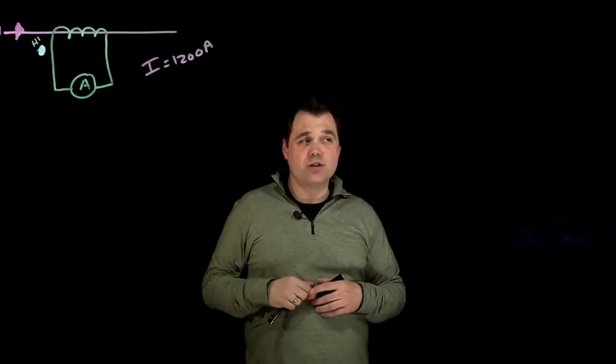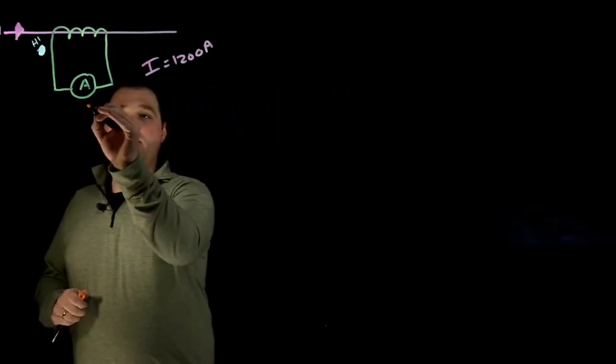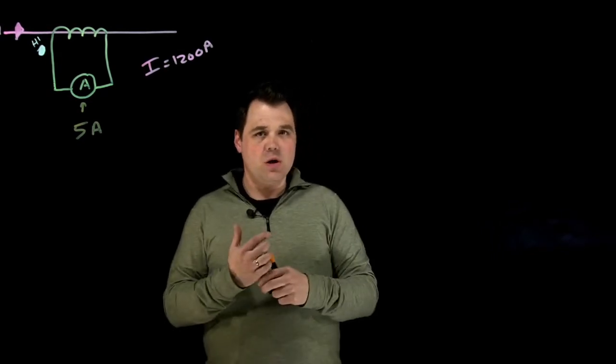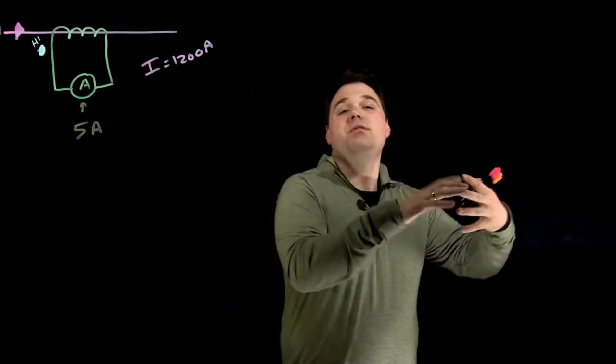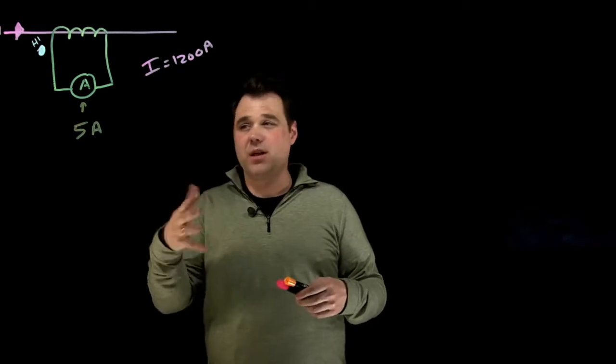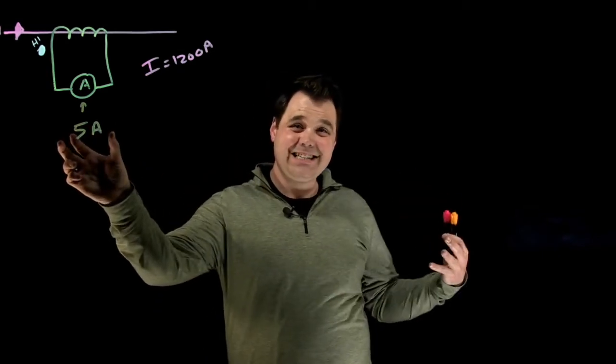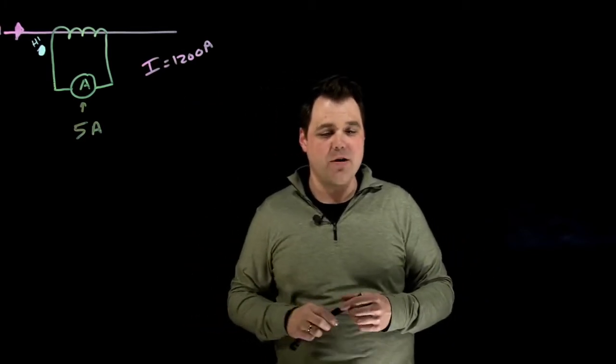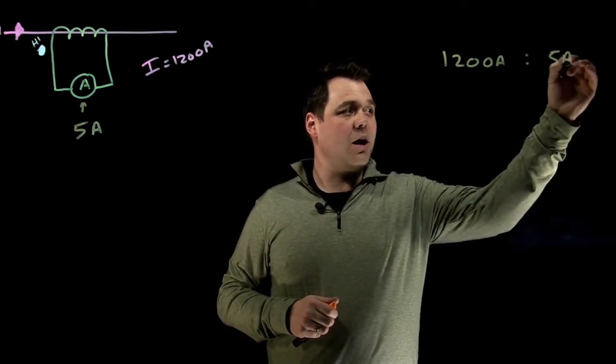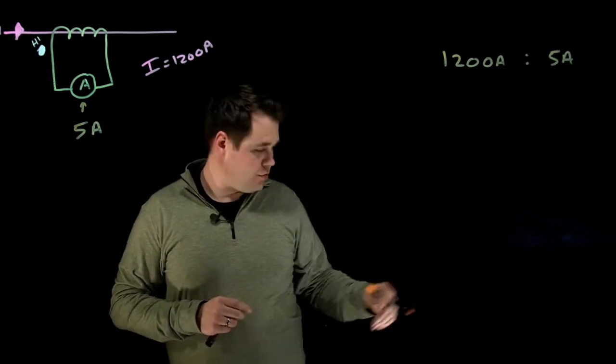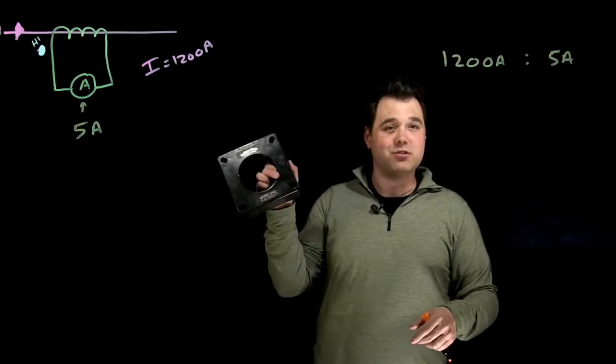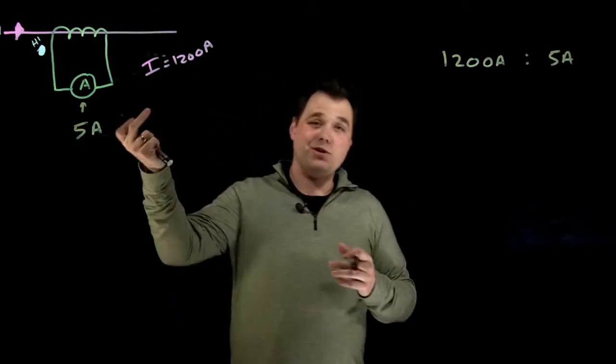Well, the secondary of this current transformer is going to be rated in five amps. So that's what it's going to bring it down to. So that makes it safe, easy to read, and it can then be input into a watt meter for metering. So in this case, to get into a calculation of how that would work, how would I use my value here on my CT in order to know what my actual current is flowing on my primary? Well, like I just said, this is a 1200 amp to five amp CT. The ones I showed you were 10 to five. And this is exactly that, 1200 to five amps. So this would be the exact CT that you could have in this example here.